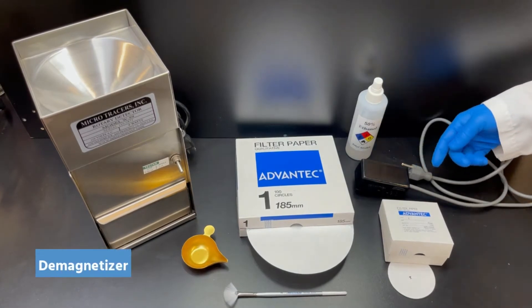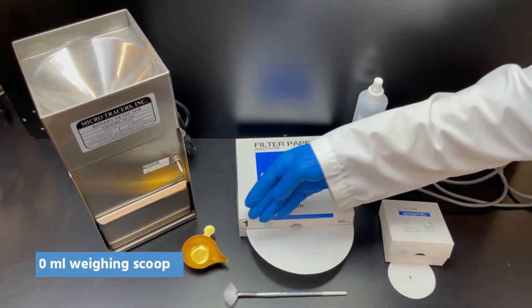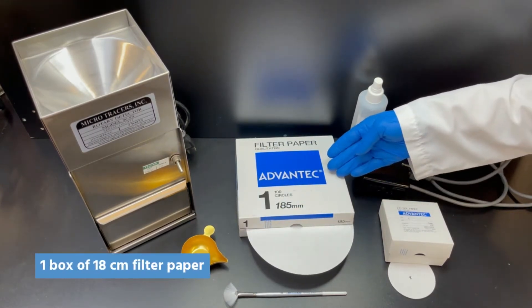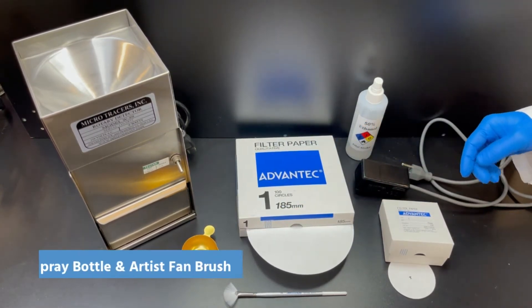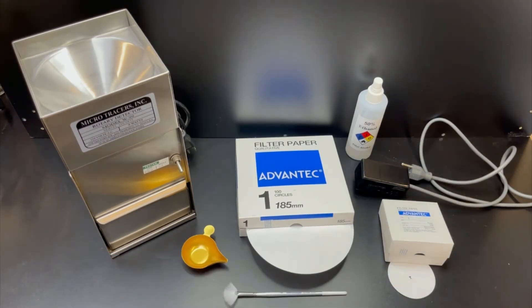Demagnetizer, two boxes of pre-drilled 7.5 centimeter filter papers, a 30 milliliter weighing scoop, one box of 18 centimeter filter paper, a small spray bottle, an artist fan brush, and Microtracer literature and software.